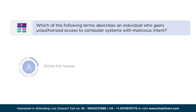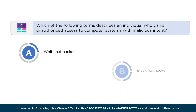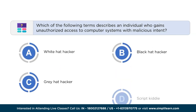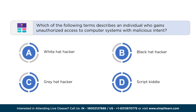Before moving forward, let me ask you a quick question. Which of the following terms describes an individual who gains unauthorized access to computer systems with malicious intent? Option A is White Hat Hacker, Option B is Black Hat Hacker, Option C is Gray Hat Hacker, and Option D is Script Kiddie. You can pause this video and answer in the comment section below.